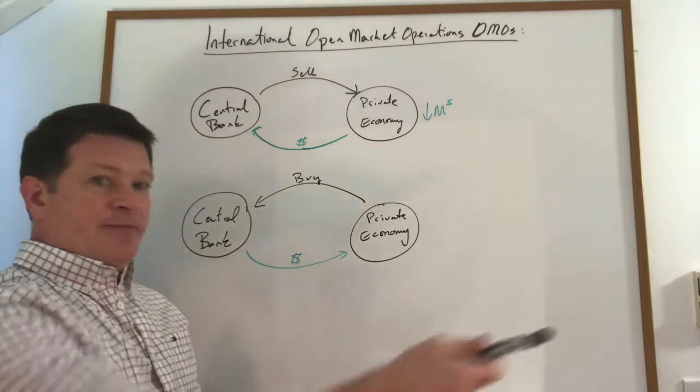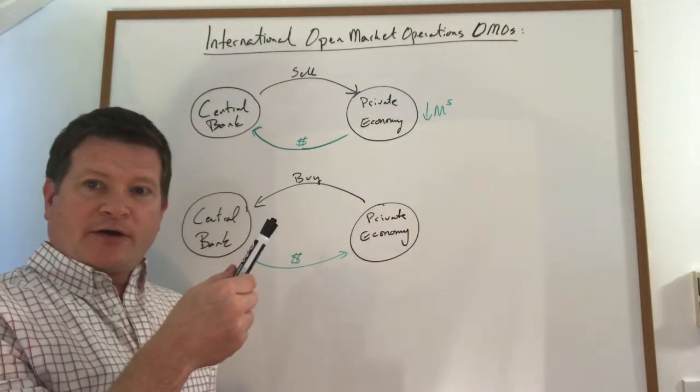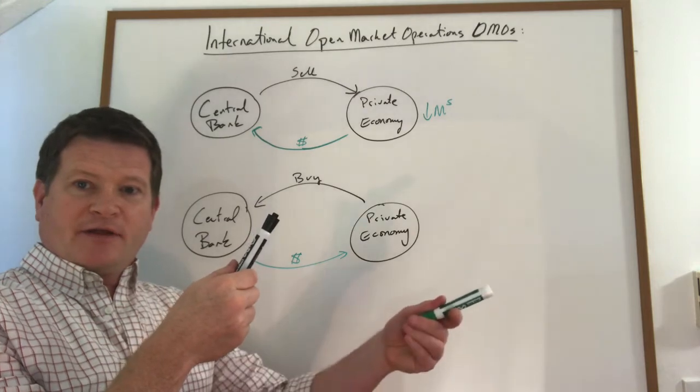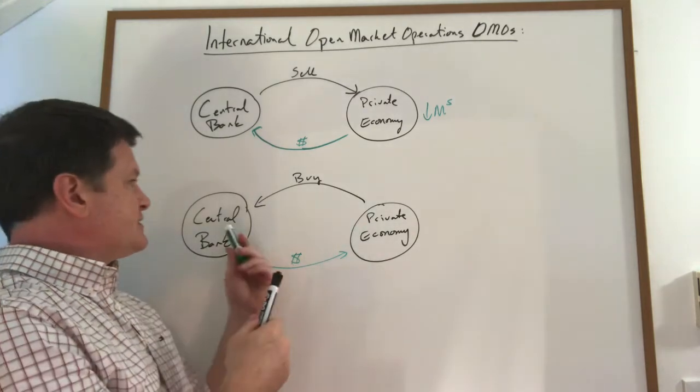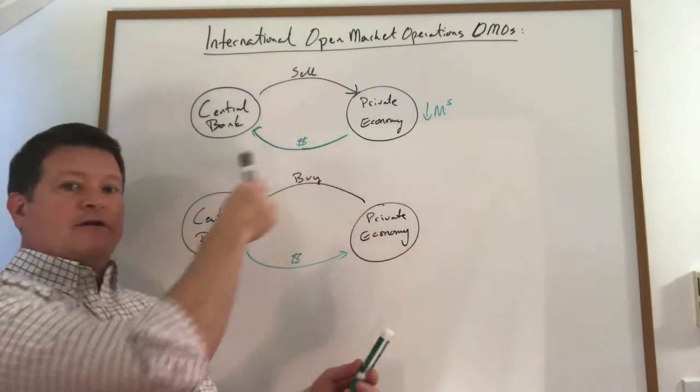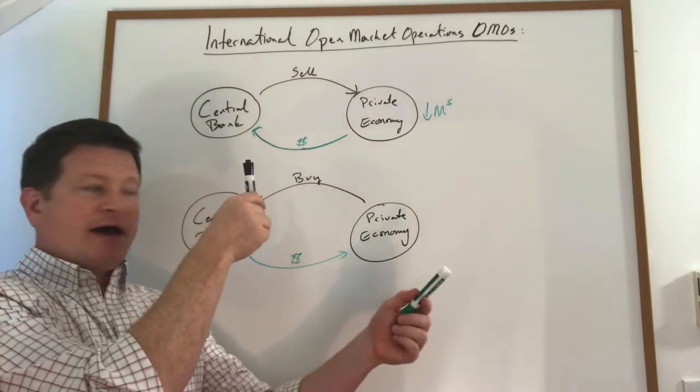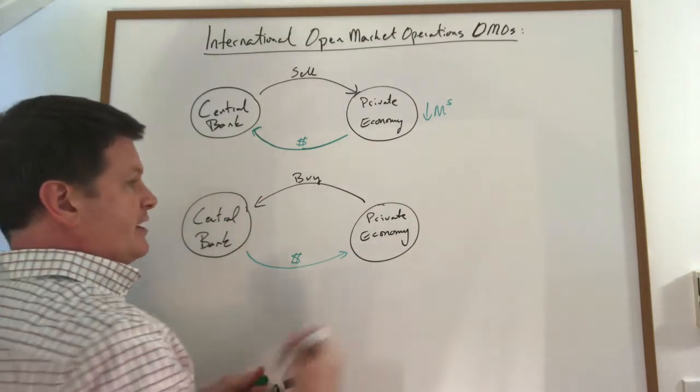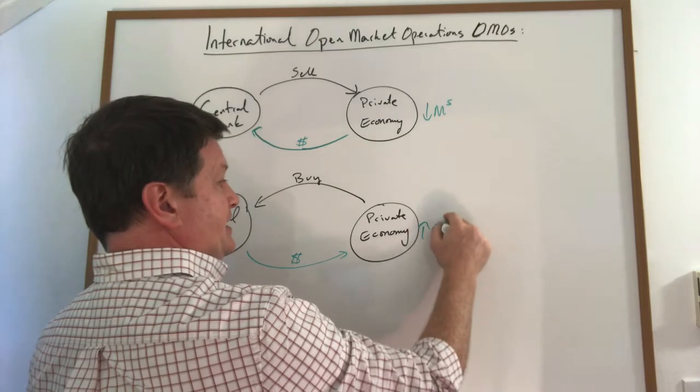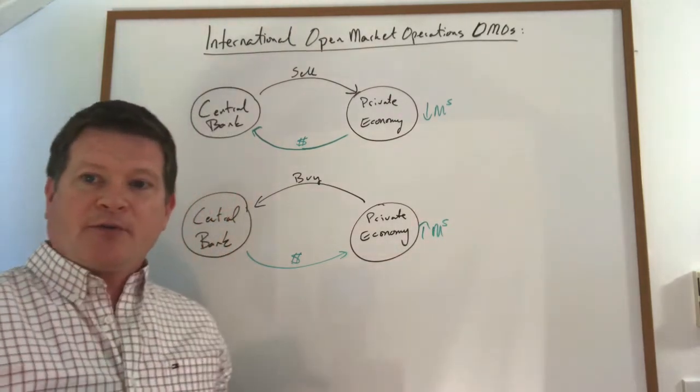Otherwise, if I buy something from the market, I end up giving them dollars. So as the central bank, if I take something out of the market and I give them cash, it increases the amount of money that is in the private market, in the private economy.